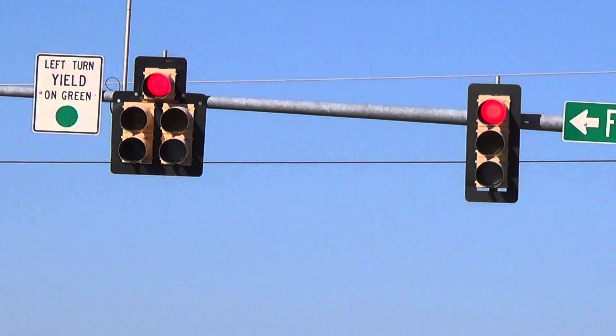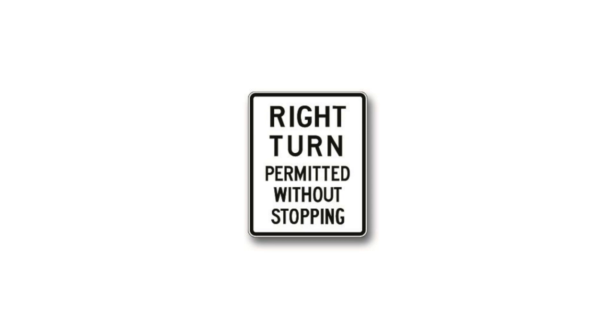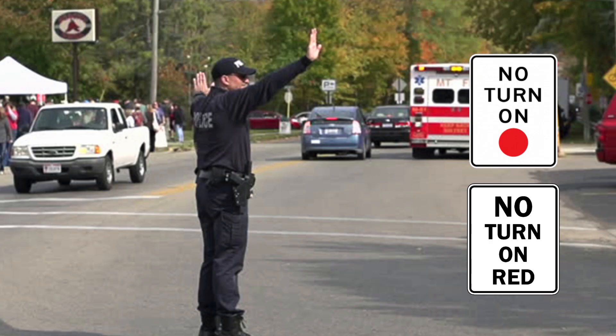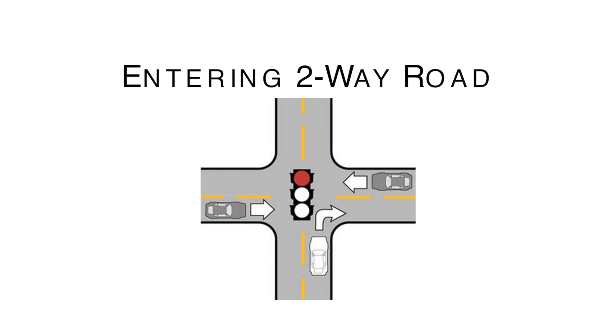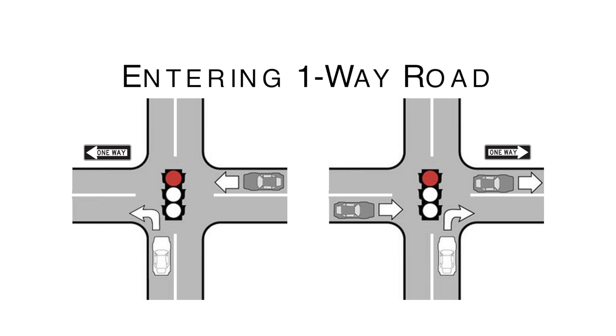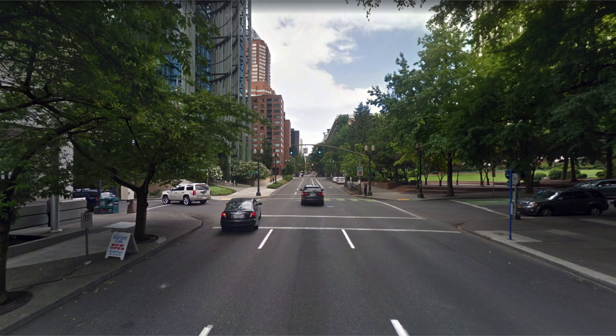Steady red: A steady red signal means stop and remain stopped until the signal changes. You are allowed to make the following turns on red after coming to a complete stop, unless a sign or police officer states otherwise. When entering a two-way road, you may turn right. When entering a one-way road, you may turn right or left in the direction of the one-way road.